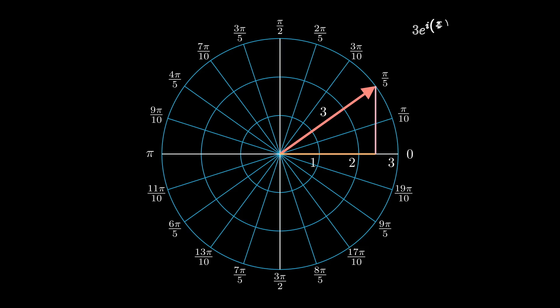So, writing it out, we get 3 times e raised to i times pi over 5. And after some more algebra, we can also get the rectangular coordinates 2.43 plus 1.76i.